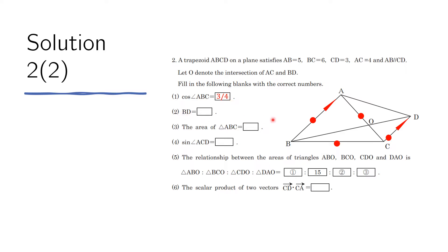Now we need to find BD. We are given two sides, so let's find the included angle using the cosine law. We notice that we have two parallel lines, CD and AB. This angle corresponds to another angle formed by the transversal, and extending the transversal shows that this angle equals the alternate angle.